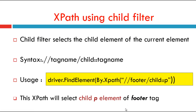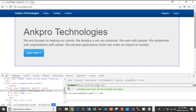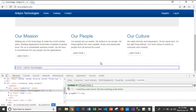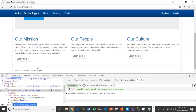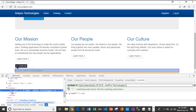The next one is XPath using child filter. The child filter selects the child element of the current element — the child axis contains the child of the current node. The syntax is double forward slash tag name forward slash child colon colon tag name. We use that in the program with driver.findElement(By.XPath). Here I am using a footer tag and identifying its child, giving the tag name as P. This XPath will select the child P element of the footer tag. In Chrome, the footer tag is visible and the P tag is its child.